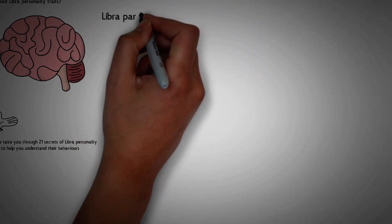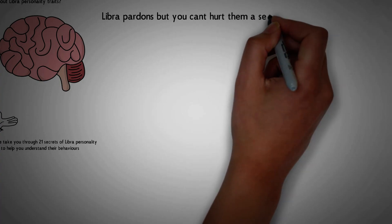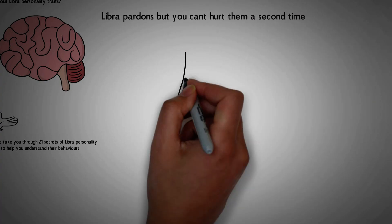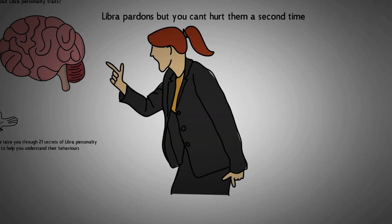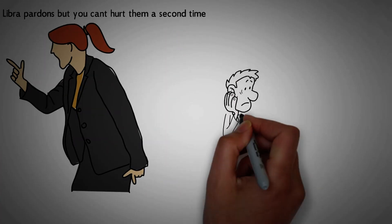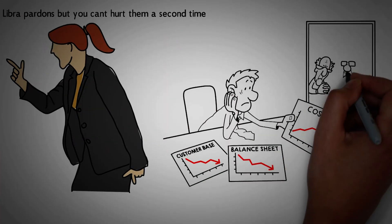Number 1. Libra pardons, but you can't hurt them a second time. Libra doesn't hold grudges when offended. Nevertheless, they learn from past mistakes and use them as an example to help them avoid similar mistakes in the future.